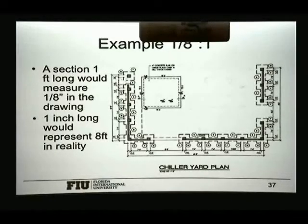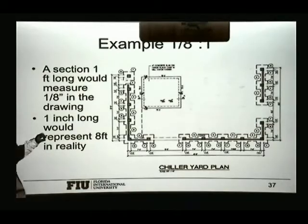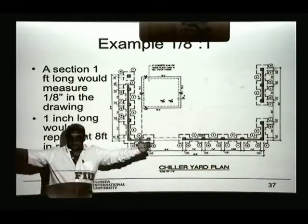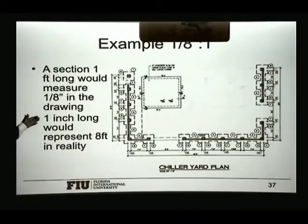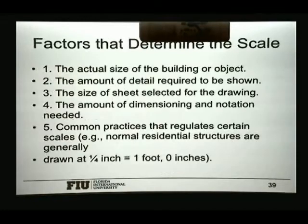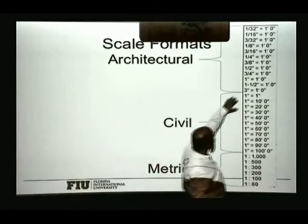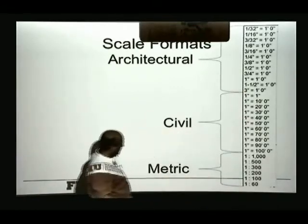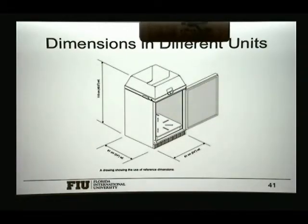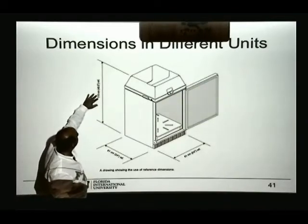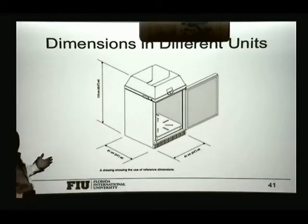Here's an example of a drawing with a 1/8-inch-to-a-foot scale. That means every time you measure 1/8 of an inch on the drawing, that is 1 foot in the building. If you measure 1 inch in the drawing, that will be 8 feet in reality. There are different factors that determine the size of the scale you're going to use — basically how big the element is and the size of the paper. You have architectural types of scales, then civil and metric types, and sometimes you may have situations where you have both centimeters and inches on the same drawing.